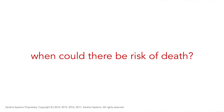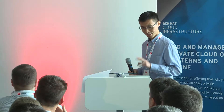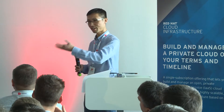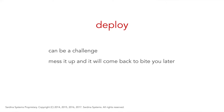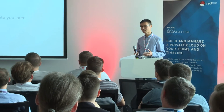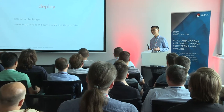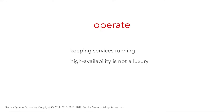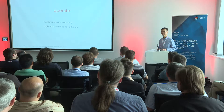So when could there be risk of death? Let's look at the lifecycle of OpenStack. We have deploy, operate, and upgrade. In the deploy phase, it can be a challenge. If you mess up the solution architecture, it will come back and bite you — and you will not find out that you've messed up until much later. In the operate phase, you just keep the services running. And here, high availability isn't a luxury — it's a must.